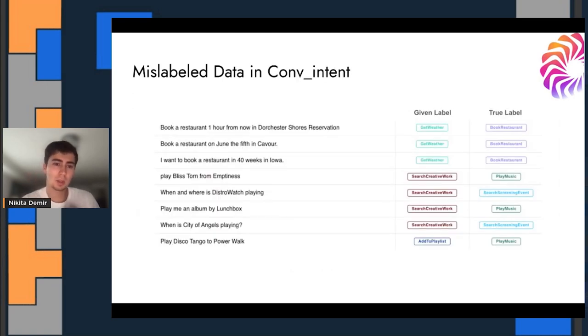It's not only limited to computer vision. Also, NLP text classification has tons of these. For example, the conv intent dataset where the model is essentially given an utterance and it has to predict the intent. So as you might imagine, like a voice assistant in your home. Booking a restaurant often was getting labeled as get weather and so on.